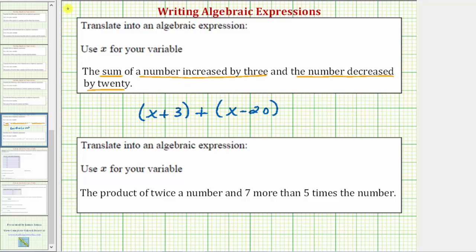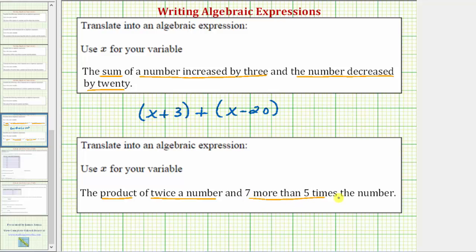Now let's look at our second example: the product of twice a number and seven more than five times a number. The first thing to recognize is that product means multiplication. When multiplying, the two things we multiply are called factors. So the first factor is 'twice a number' and the second factor is 'seven more than five times a number.'